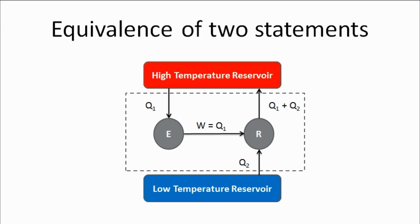Now, moving towards the topic — even though these two statements sound different, they are actually conveying the same meaning in different words. This equivalence can be proved if we violate one statement, the other statement gets violated automatically. That means these two statements are nothing but conveying the same meaning. To prove this, we violate any one of the statements, which leads to the violation of the other.